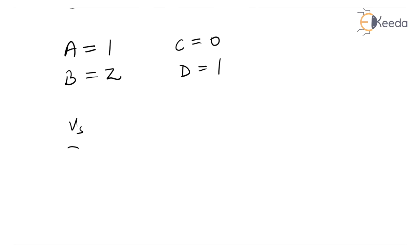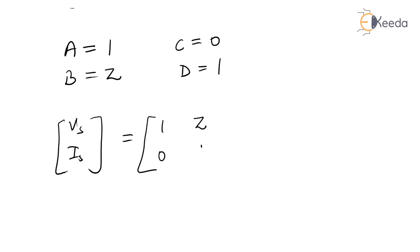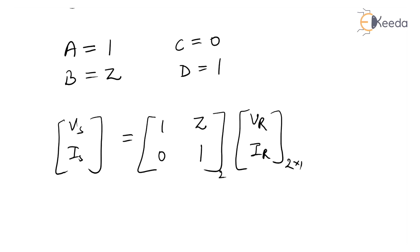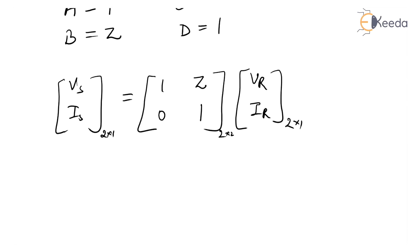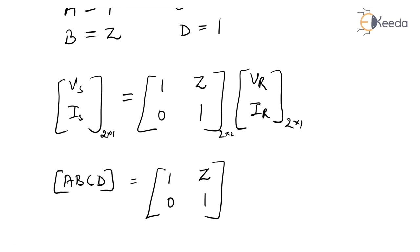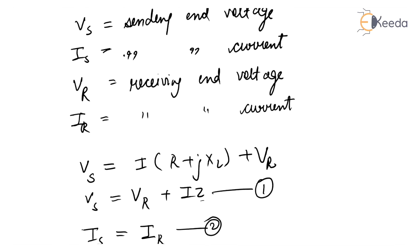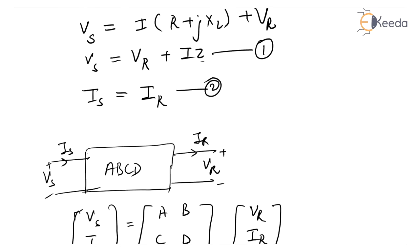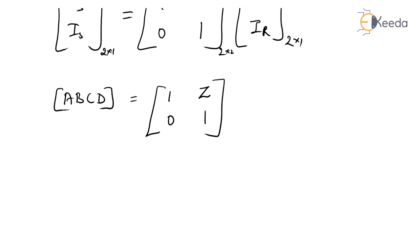So the ABCD parameter matrix for a short transmission line is [1, Z; 0, 1], a 2×2 matrix multiplied by [Vr, Ir]. The ABCD parameters of a short transmission line are: A equals 1, B equals Z, C equals 0, and D equals 1, where Z equals R plus jXL.